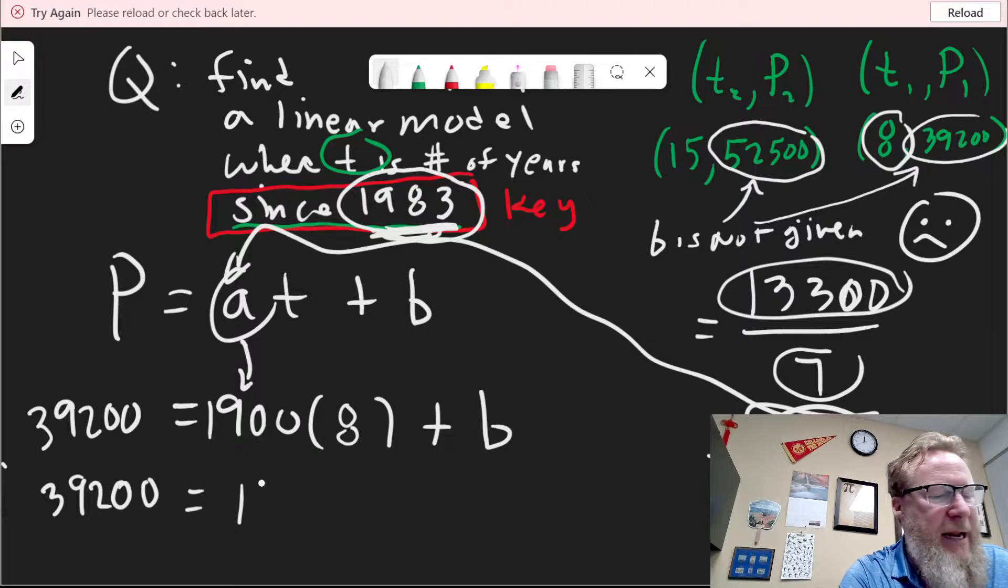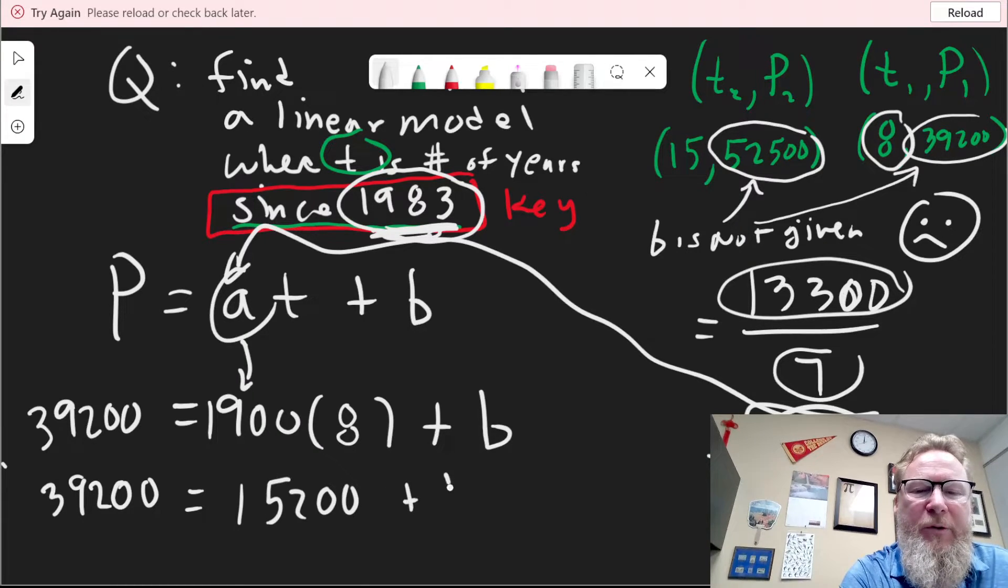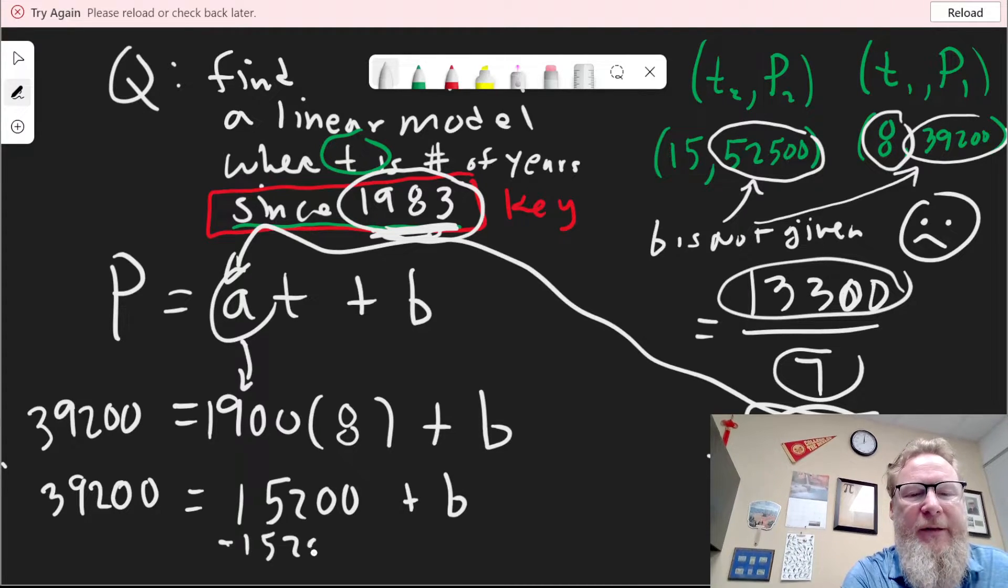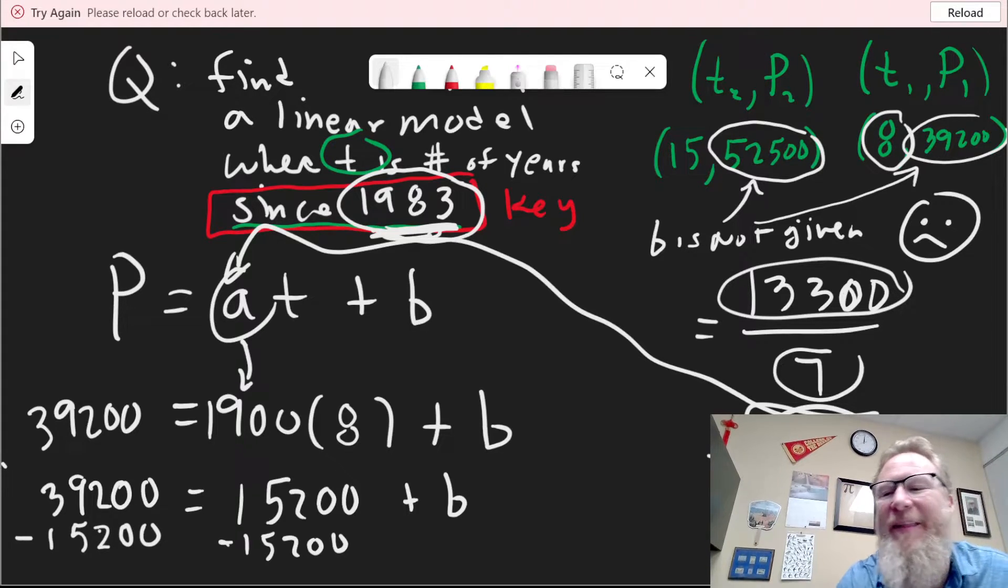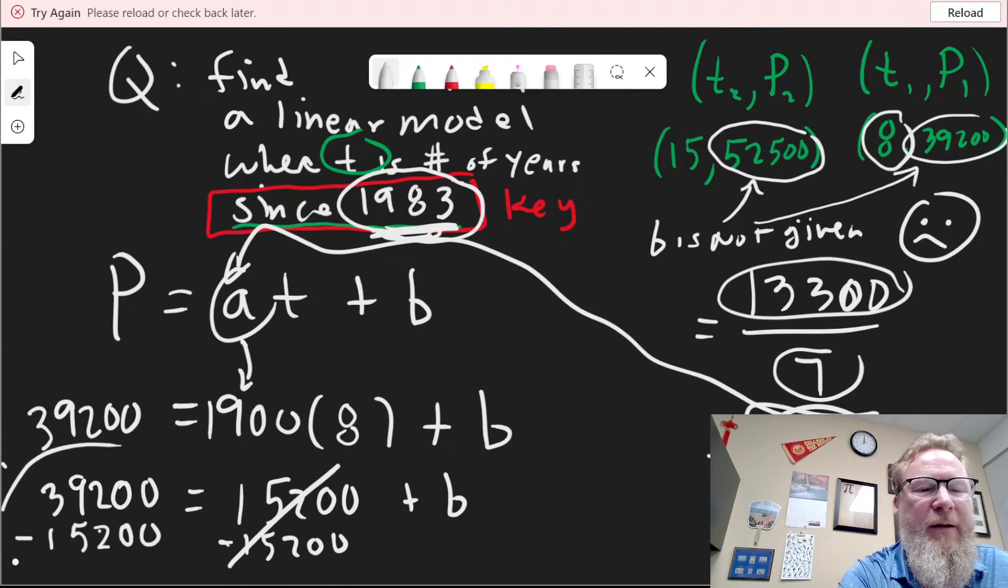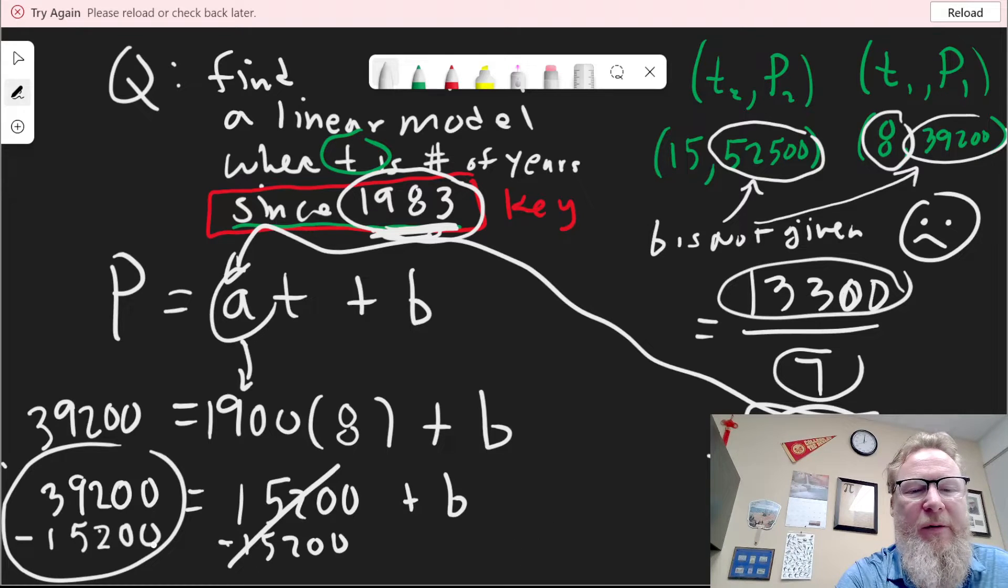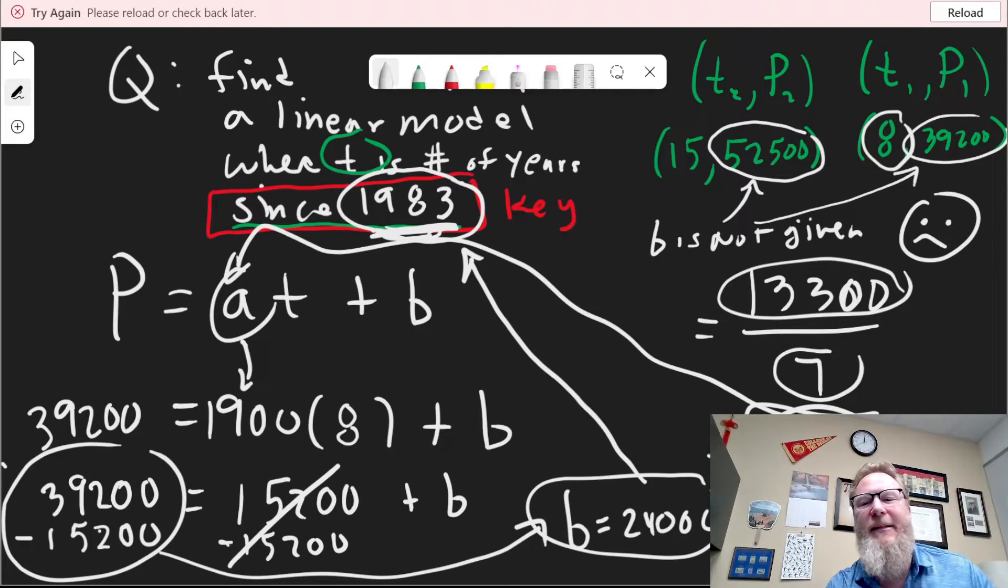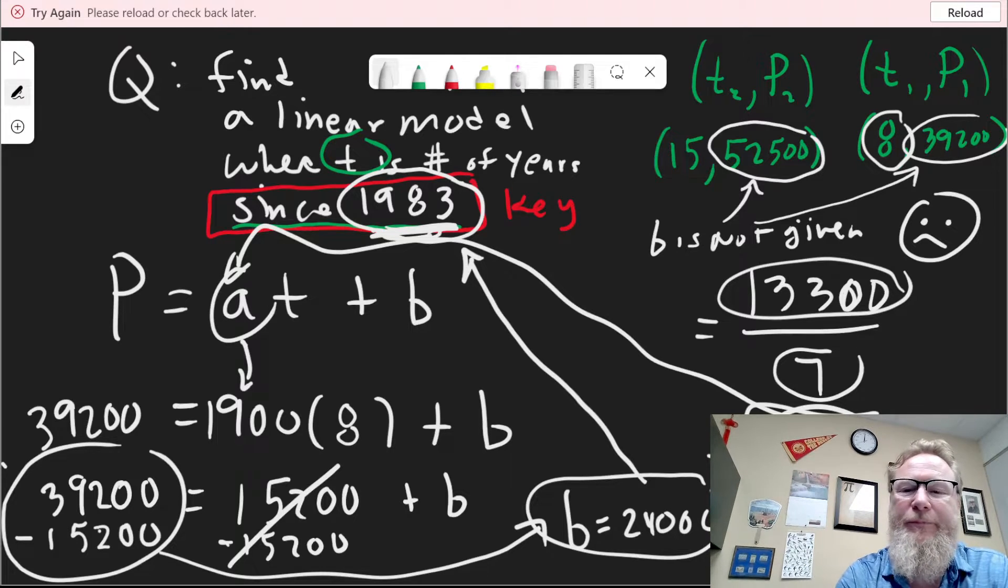So what we're going to do is we're going to use our model. We already have the form: P equals AT plus B. We know the population. Pick a number of years. Since 1983, you can use either the 8 or the 15. I'm going to use the 8 because it's smaller.